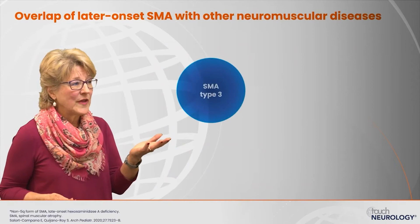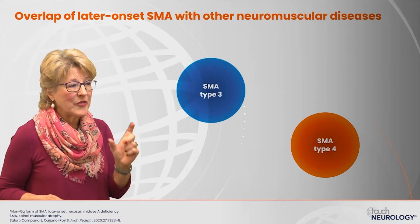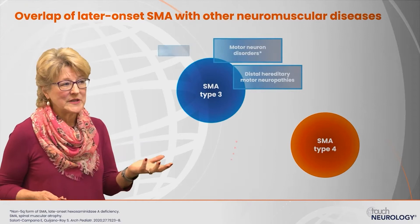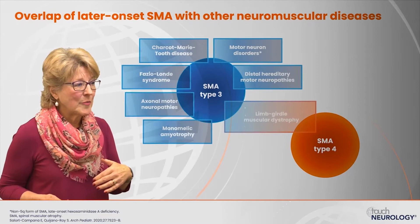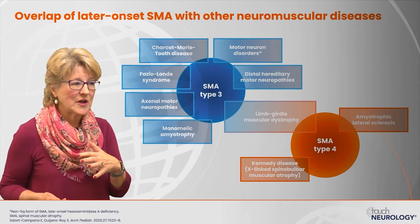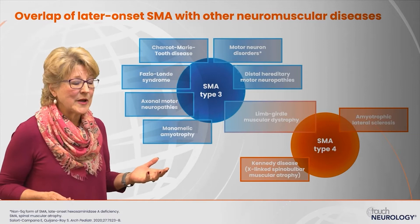There's overlap between SMA and other neuromuscular disorders, making it less clear to think about spinal muscular atrophy. With type 3 patients, we consider hereditary sensory motor neuropathies like Charcot-Marie-Tooth disorder, motor neuropathies, and limb girdle dystrophy. In type 4 patients, as they get closer to adulthood, we might consider ALS or Kennedy disease, which is an X-linked spinobulbar muscular atrophy.